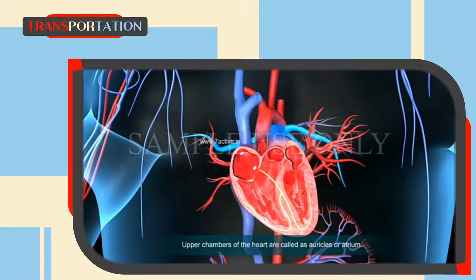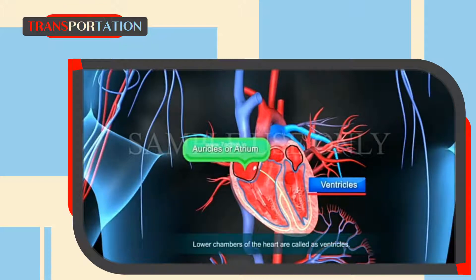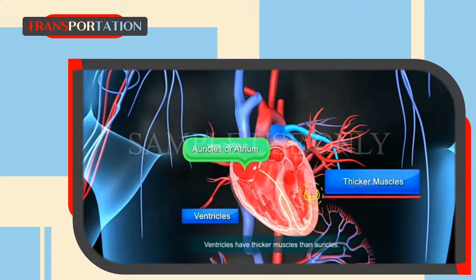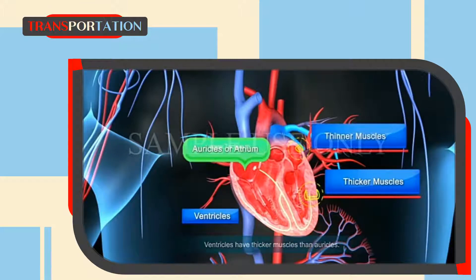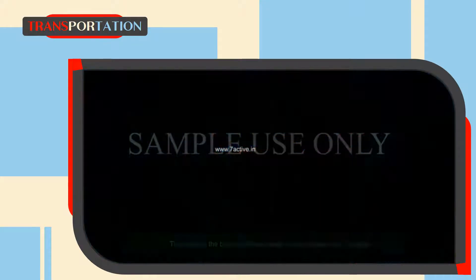The upper chambers of the heart are called auricles or atria. The lower chambers of the heart are called ventricles. Ventricles have thicker muscles than auricles. To prevent the backward flow of blood, valves are present between the auricles and ventricles.